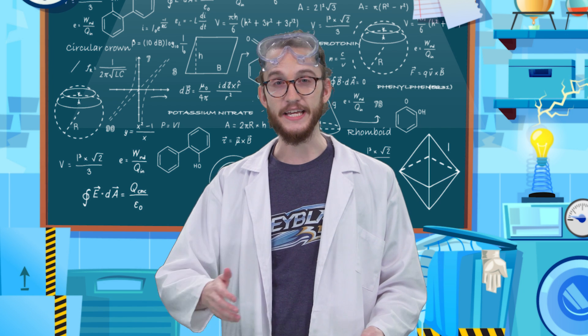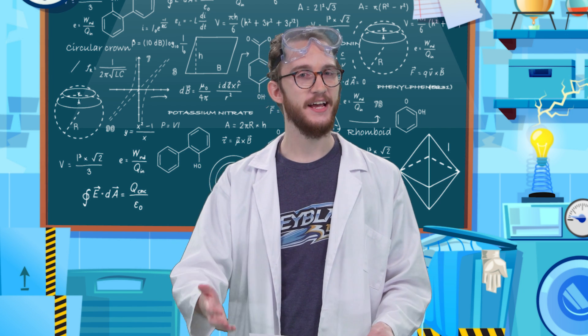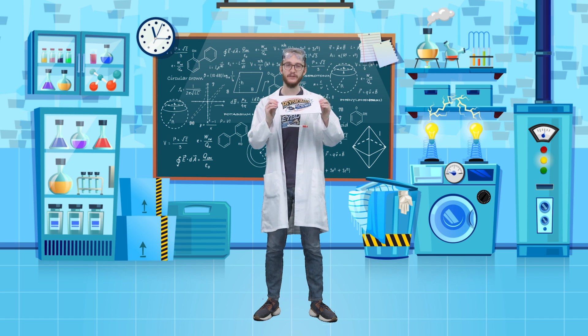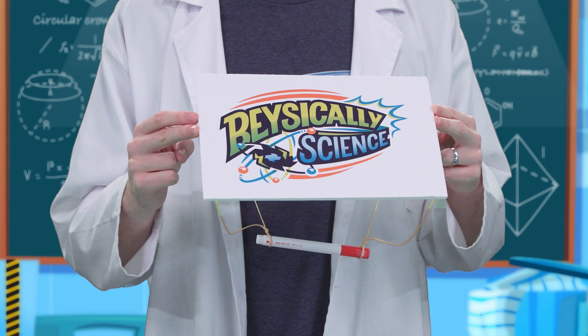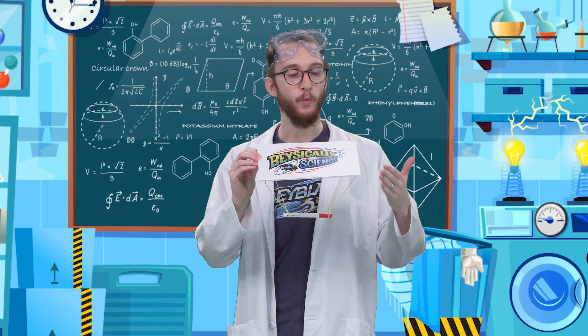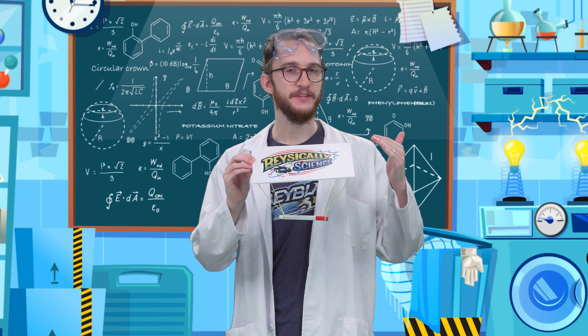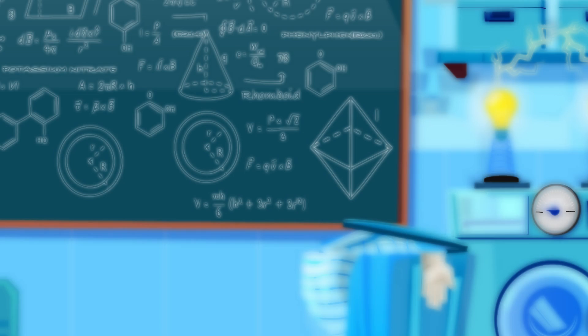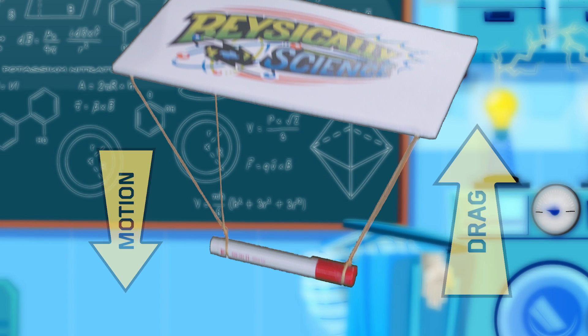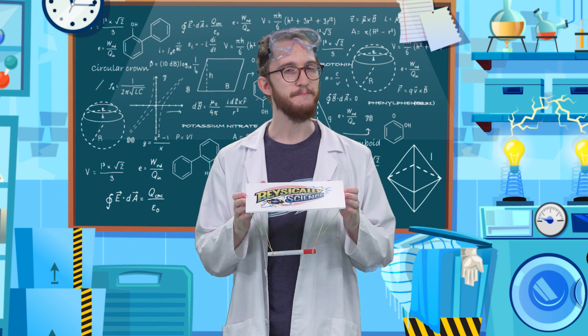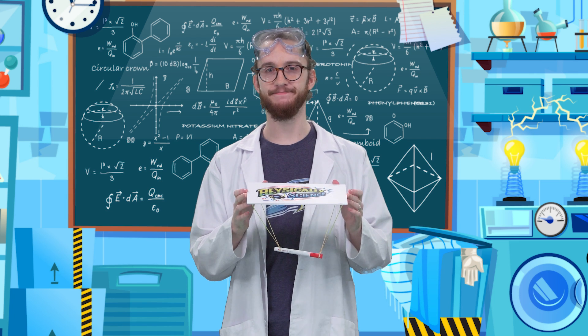Now, if we could only increase the surface area of the pen, we could increase drag and slow it down. This pen-saving parachute has a surface area of about 88 inches squared. With this in place, the surface area of our pen is a lot bigger, so the drag will be a lot bigger too. That means it'll have a much bigger drag force acting upwards when I drop it.